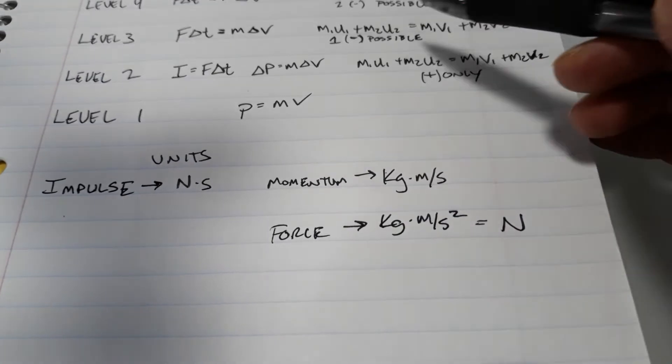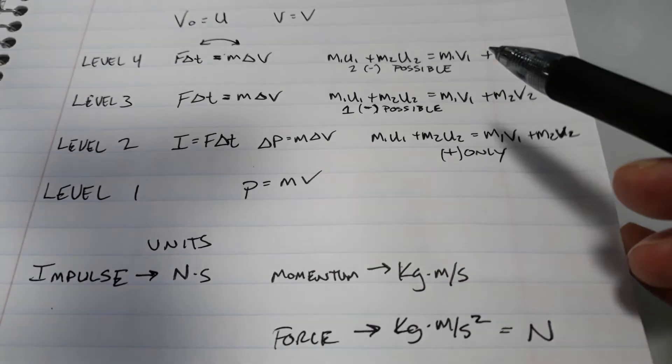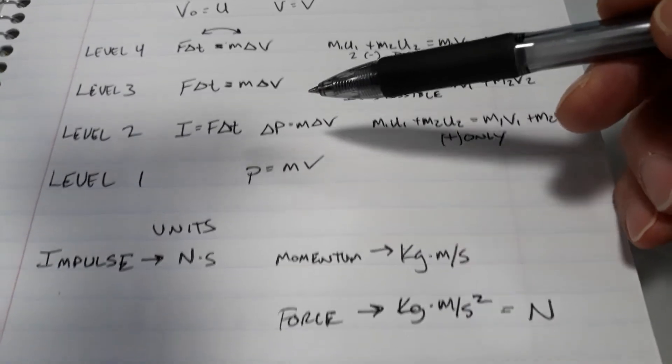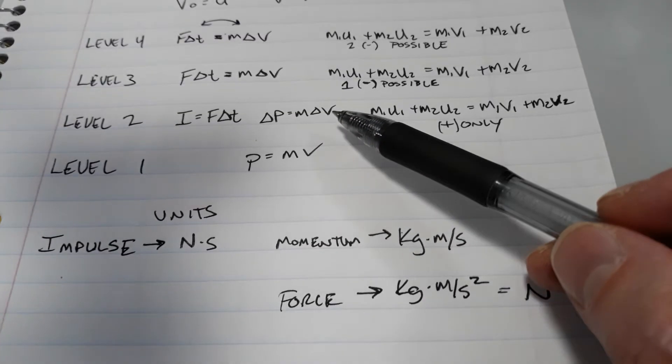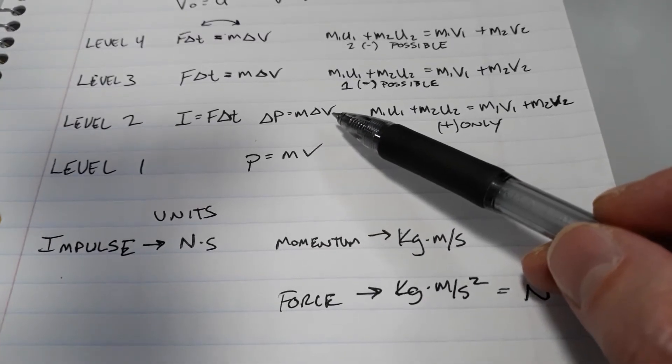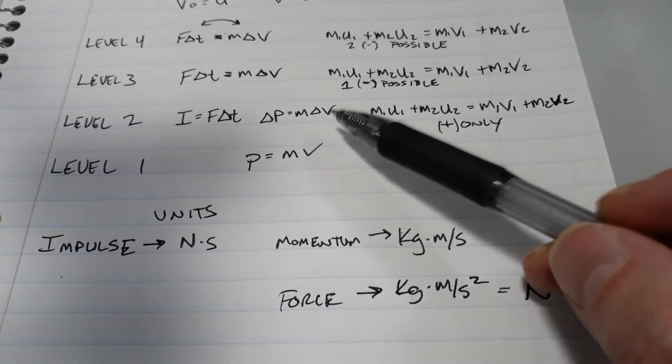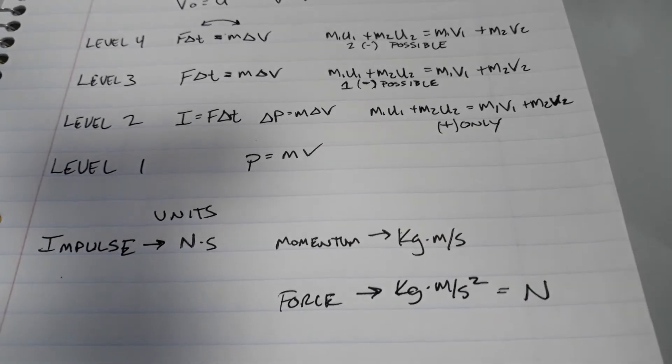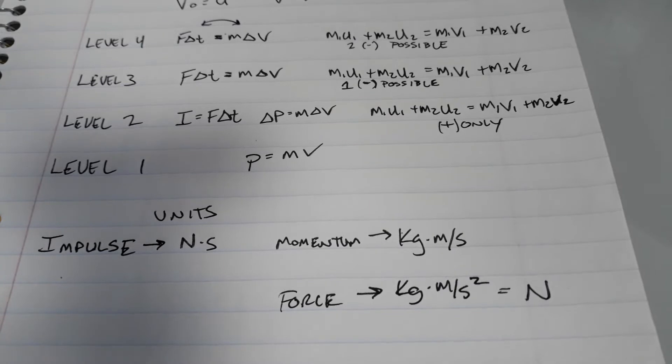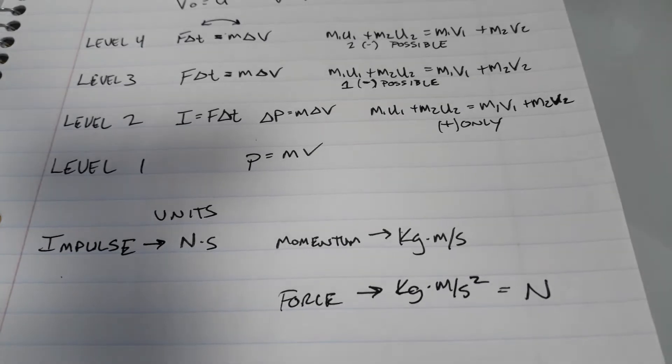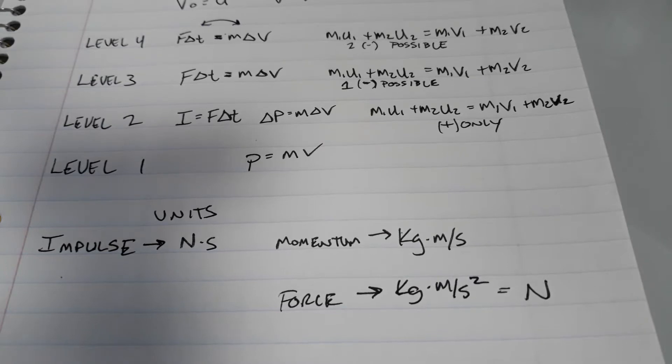From there, we go up to level two. At level two, we're going to see a slight modification to the momentum equation. Instead of momentum, now we're going to look at the change in momentum, but that should not be super difficult. Because we've looked at velocities and changes in velocities. So this is not a new thing.